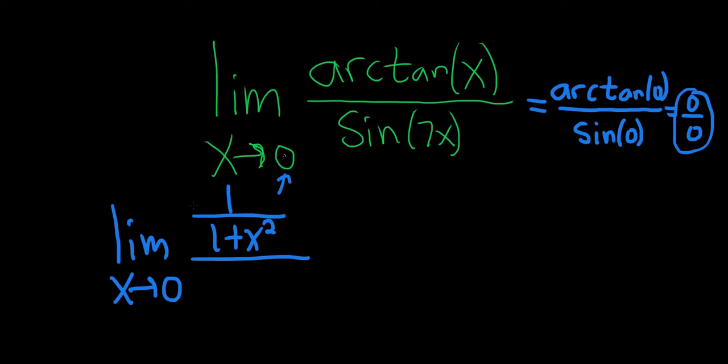And the derivative of sine is cosine, but here it's sine of seven x. So it'll be cosine of seven x times the derivative of the inside, which is seven. That's the chain rule.